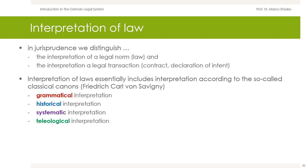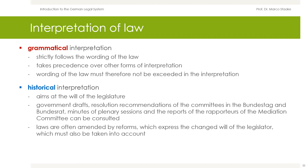The interpretation of law essentially includes the interpretation according to the so-called classical canon established by Friedrich Karl von Savigny. We have, first, the grammatical interpretation; second, the historical interpretation; third, the systematic interpretation; and fourth, the teleological interpretation. The grammatical interpretation strictly follows the wording of the law and therefore takes precedence over other forms of interpretation. The wording of the law must not be exceeded in the interpretation — it forms the limits of interpretation.